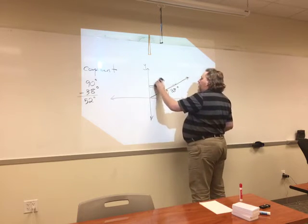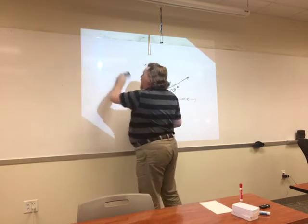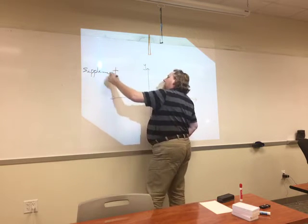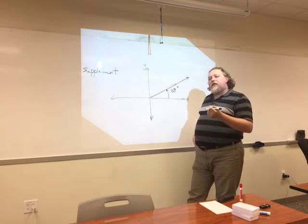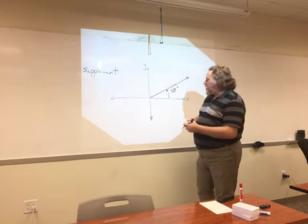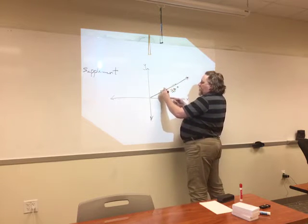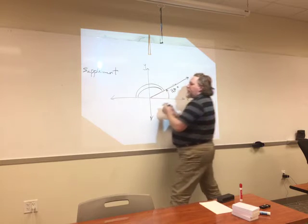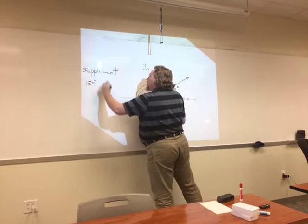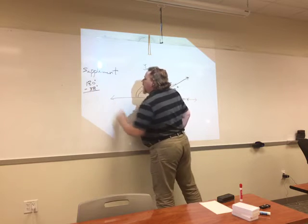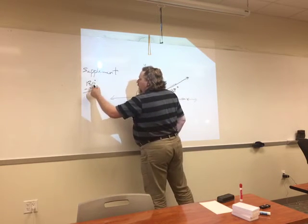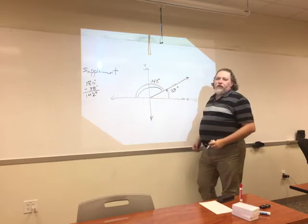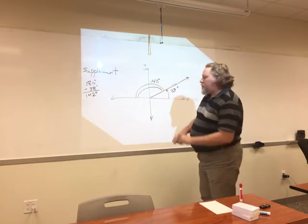What if I asked for a supplement? In geometry, supplement means two angles that together make 180 degrees — a straight angle. If I'm at 38 degrees, I subtract: 180 degrees minus 38 degrees gives me 142 degrees. So the supplement is 142 degrees.